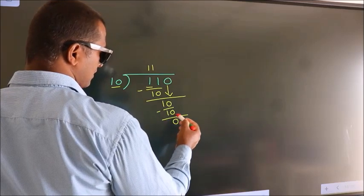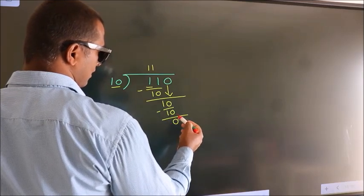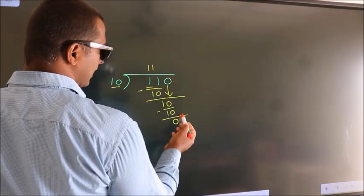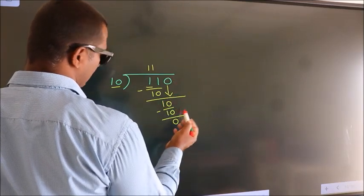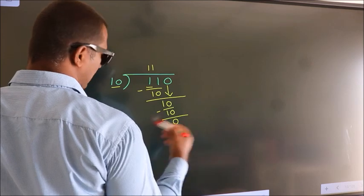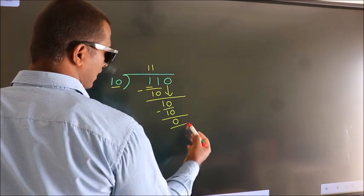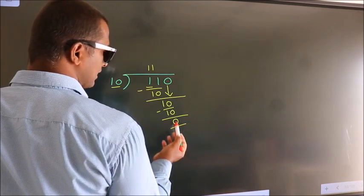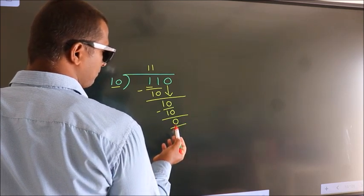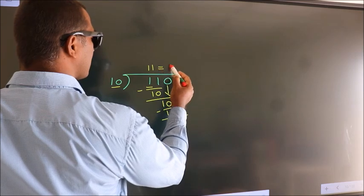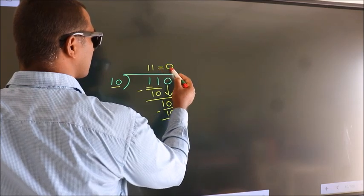After this, there are no more numbers to bring down. And we got remainder 0. So this is our quotient.